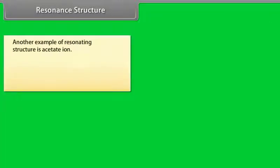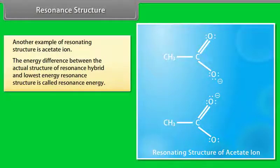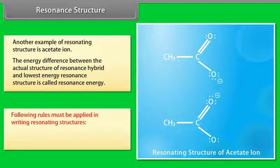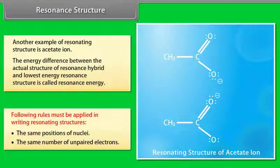Another example of resonating structures is the acetate ion. The energy difference between the actual structure of the resonance hybrid and the lowest energy resonance structure is called resonance energy. The following rules must be applied in writing resonating structures: the same positions of nuclei and the same number of unpaired electrons.